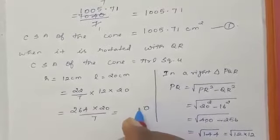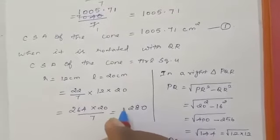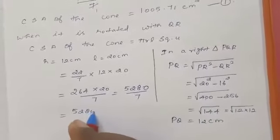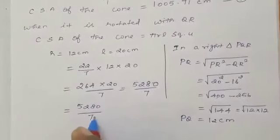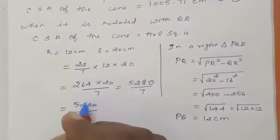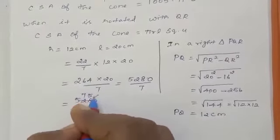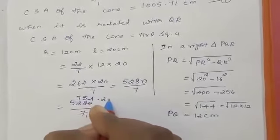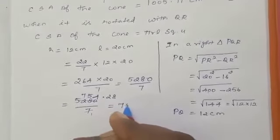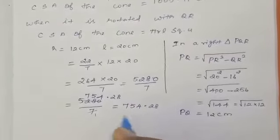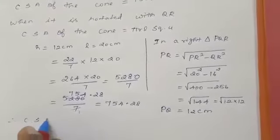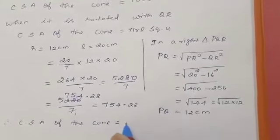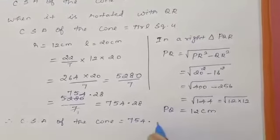5280 divided by 7. 5280 divided by 7, using the 7th table we can divide means 7 times, then 5 times, next to 4 times, next to 5 remaining it means 28. 754.28. Therefore, CSA of the cone equal to 754.28.